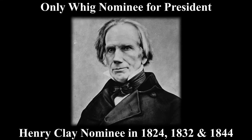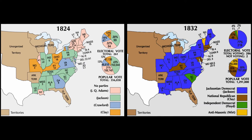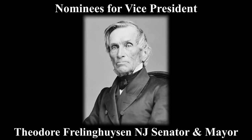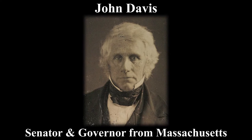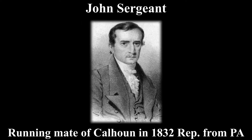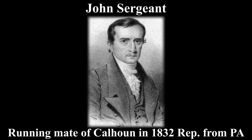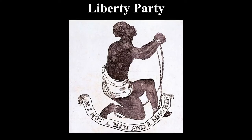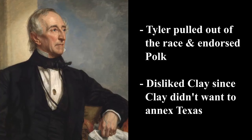For the Whig Party, the only nominee for President was influential leader Henry Clay. This was his third time running for President after he had lost in 1824 and in 1832. For the Vice President nominees they were: Theodore Frelinghuysen, Senator and Mayor from New Jersey; John Davis, Senator and Governor from Massachusetts; Millard Fillmore, House Representative from New York; and finally John Sargent from Pennsylvania, who was Calhoun's running mate back in 1832. In the end, the Whigs nominated Henry Clay and Theodore Frelinghuysen as his running mate. We cannot forget to mention the Liberty Party, who nominated James G. Birney.